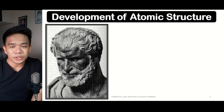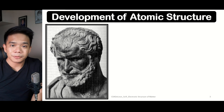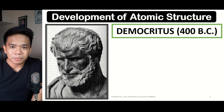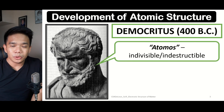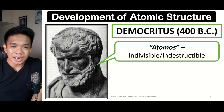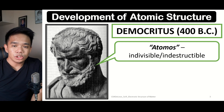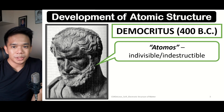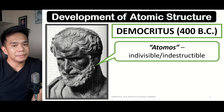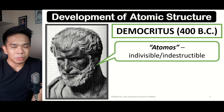It all began during the 5th century BC when a Greek philosopher named Democritus coined the term 'atomos' to describe the building blocks of matter. He described atomos as an indivisible or indestructible structure. The term 'atom' that we use today came from the word atomos.